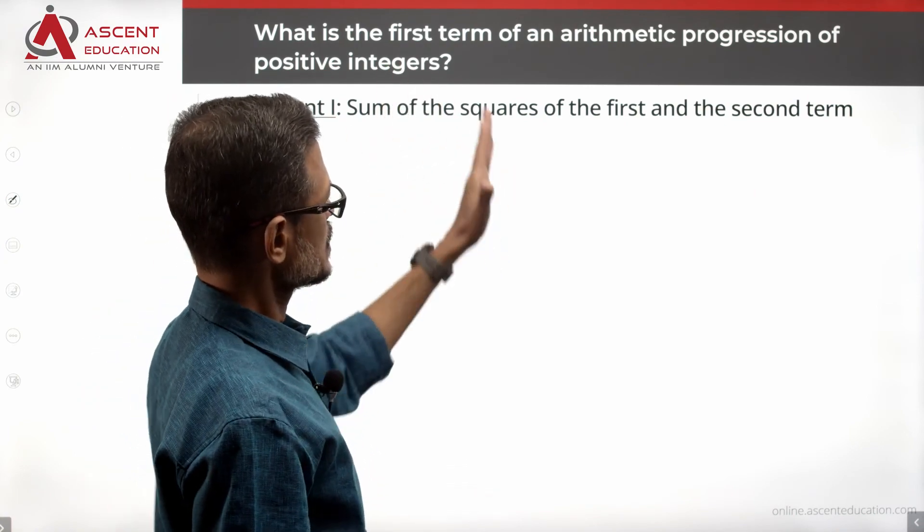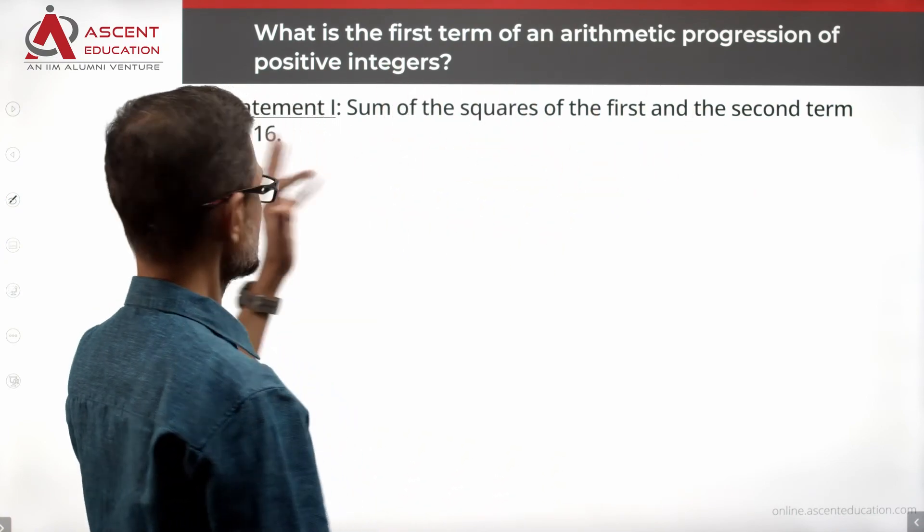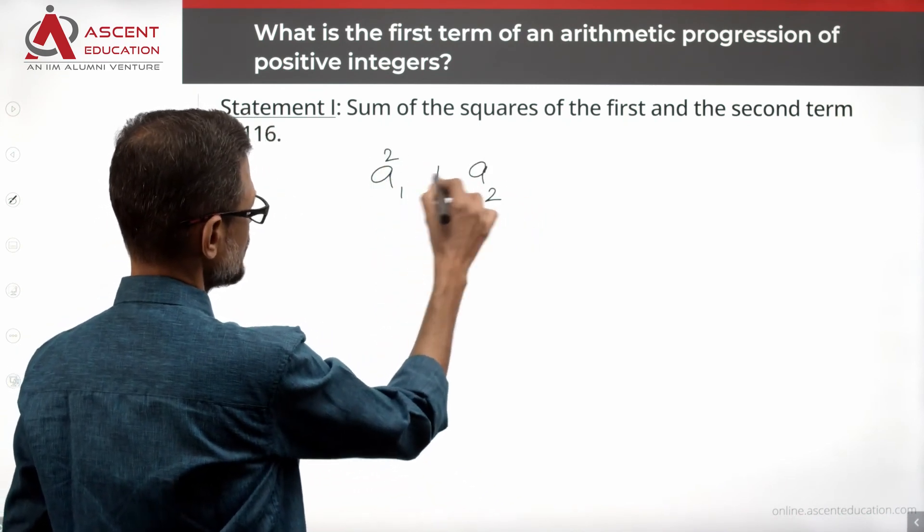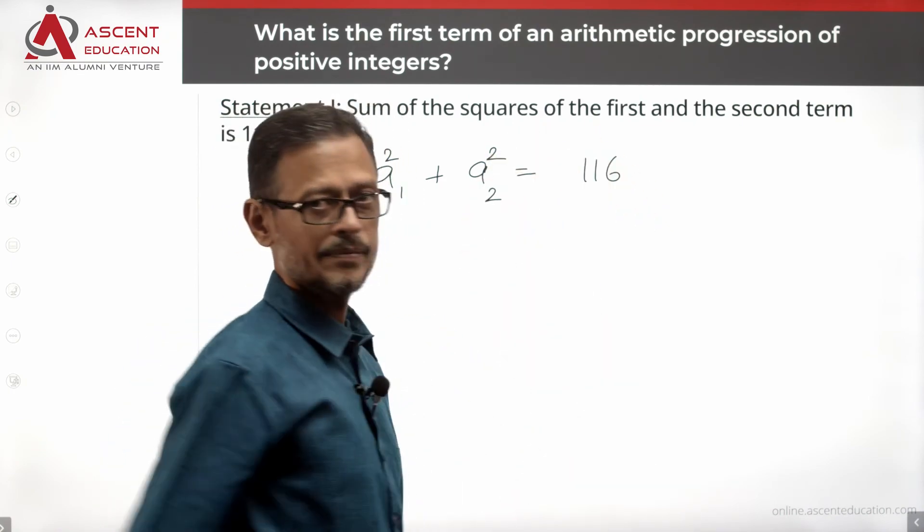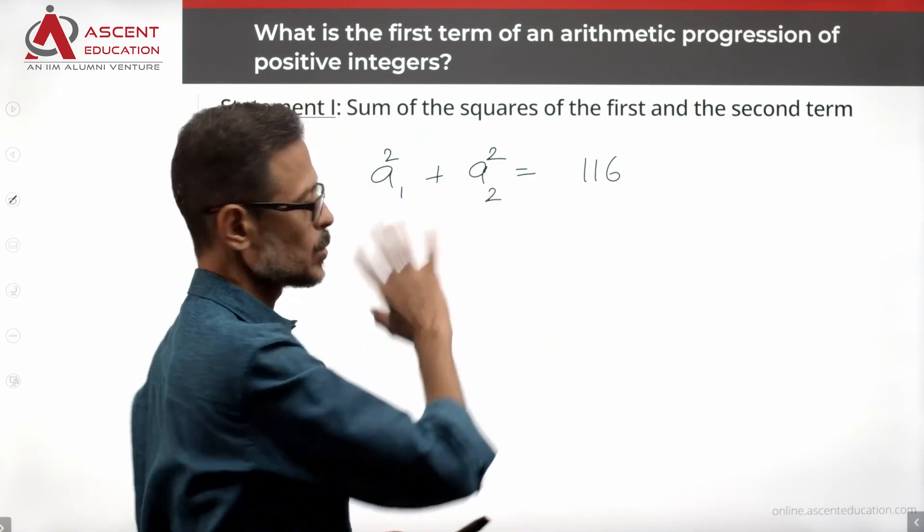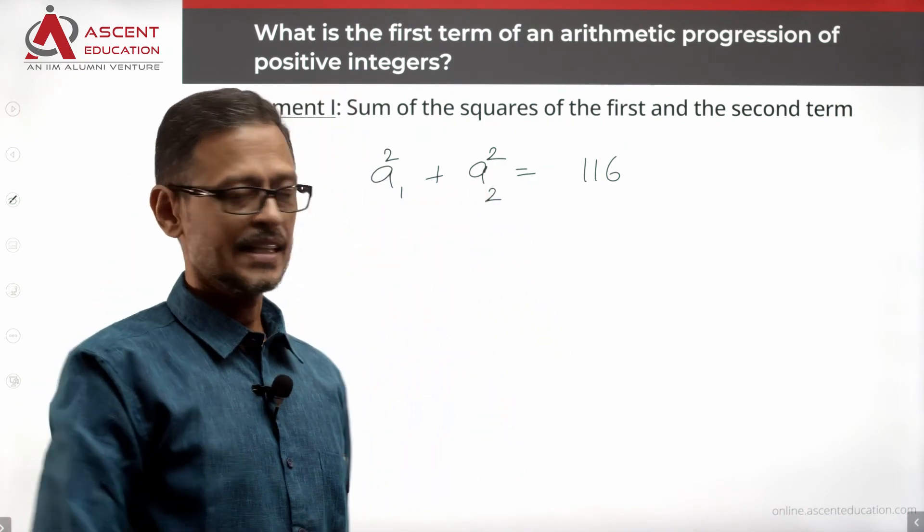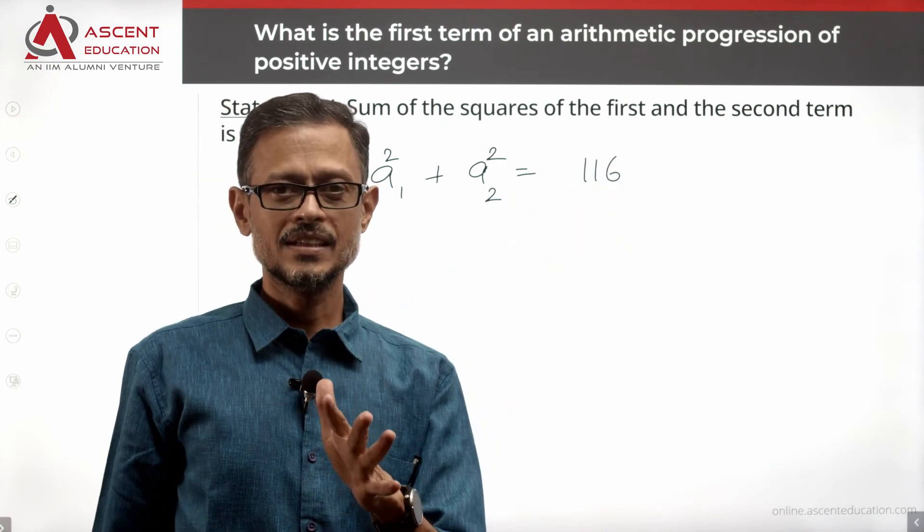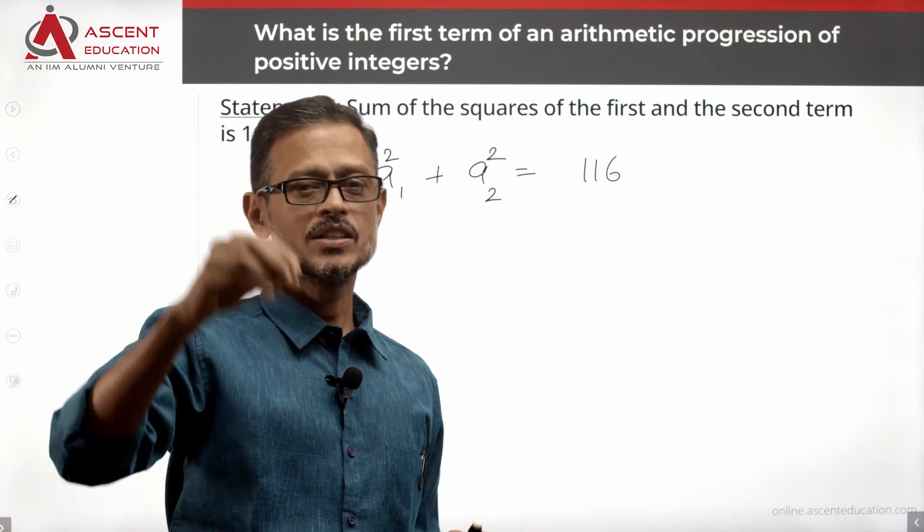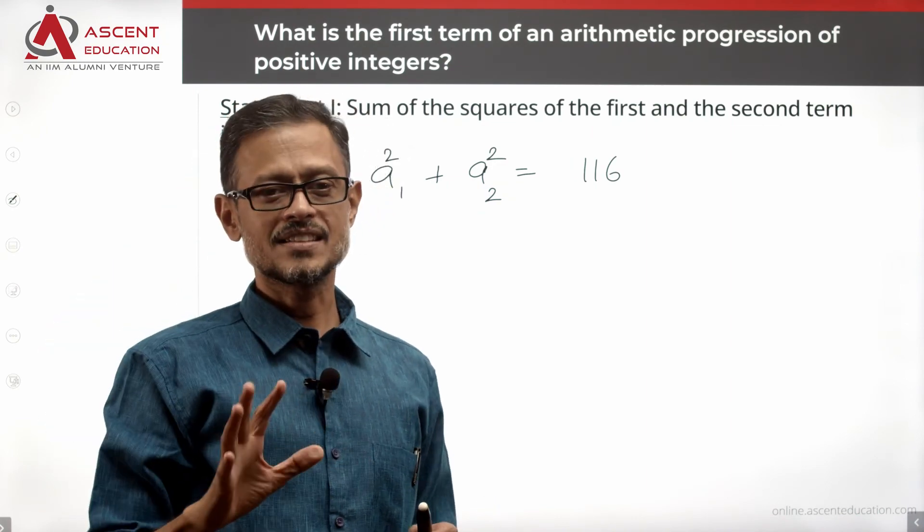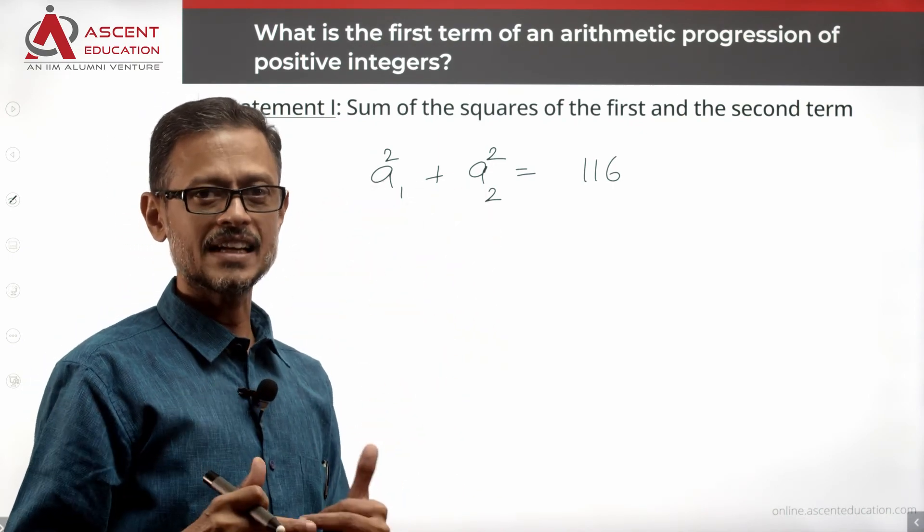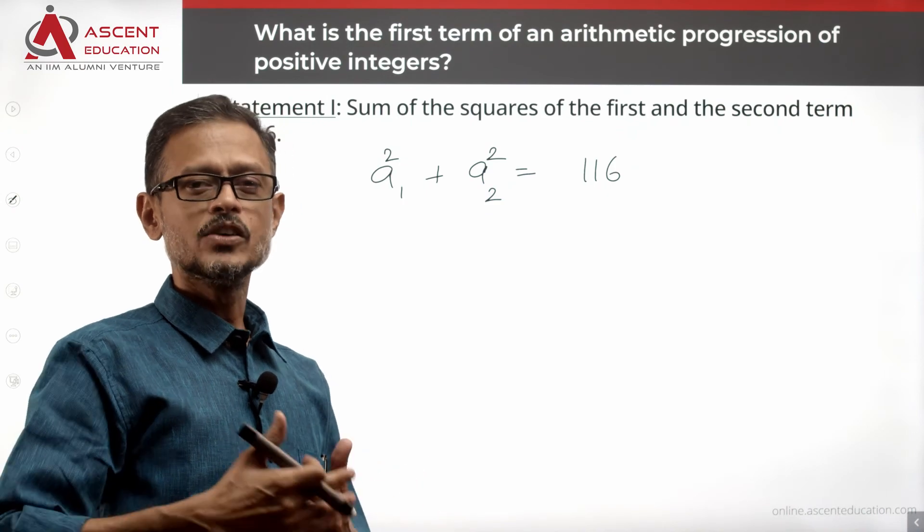Statement 1 says: Sum of the squares of the first and second term is 116. So first term A1 and second term A2, these two numbers squared equals 116. It's all positive integers. A1, A2's value must be 10 or less, because 11 square is 121. So two positive integers' squares sum to 116. The maximum either can take is basically 10 squared. A1 is 10, A2 is 10. So 10 squared maximum. Let's see what's possible.